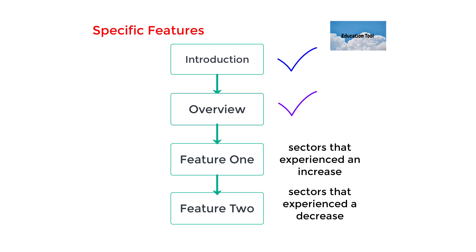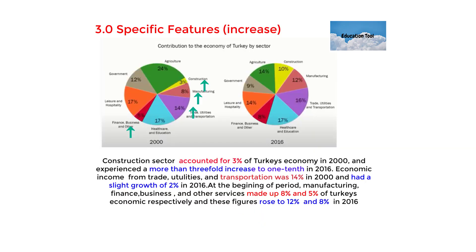I introduced the topic by paraphrasing the given statement. In paragraph two, I gave a general overview of both pie charts. In paragraph three, I'll be talking about the sectors that experienced an increase in percentage, and in the last paragraph, I'll be talking about the sectors that experienced a decrease in percentage. I compared the sectors that did increase in percentage between 2000 and 2016 — for instance, construction, manufacturing, trade, utility and transportation, and finance, business, and other services all experienced an increase percentage-wise.